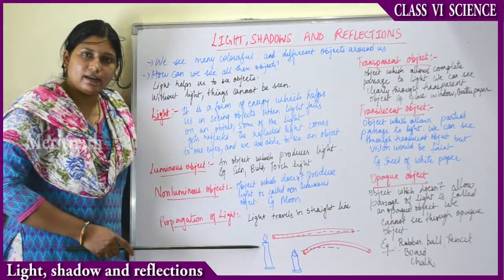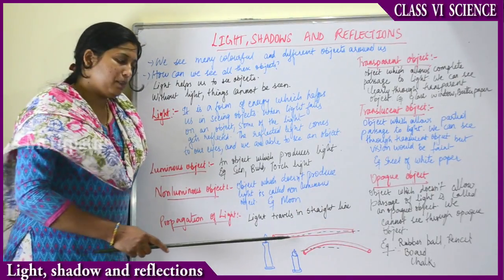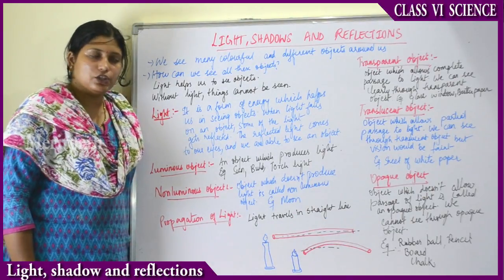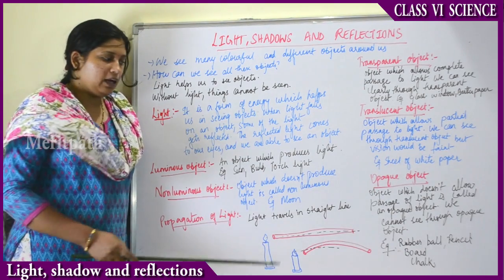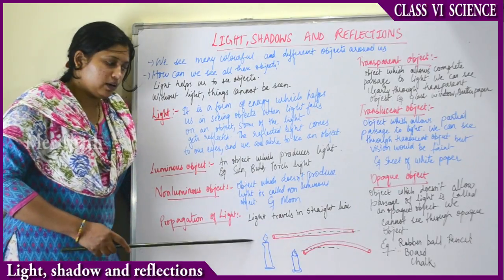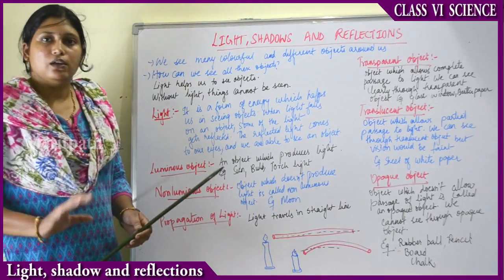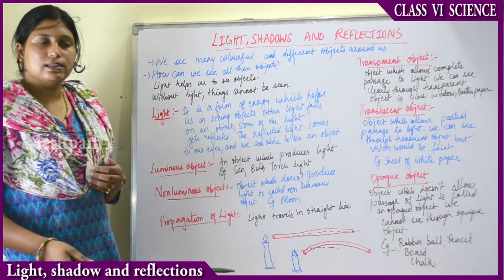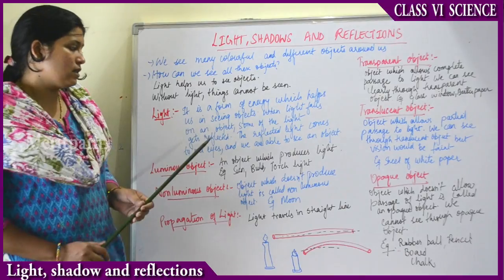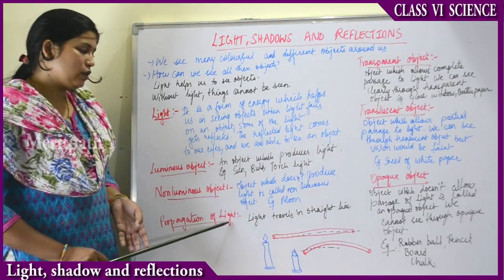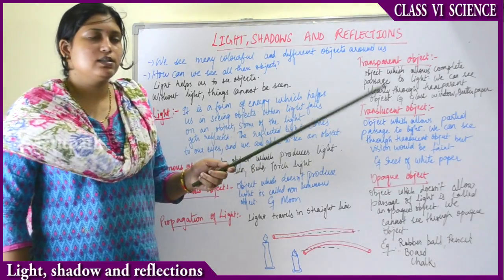Suppose you have lighted a candle and placed a pipe in front of it. You can see the light from one end to the other only when the pipe is placed in a straight line. If the pipe is curved, the light will not pass through. This proves that light travels in a straight line. With a straight pipe you can see the candle light from both ends, but not with a curved pipe.